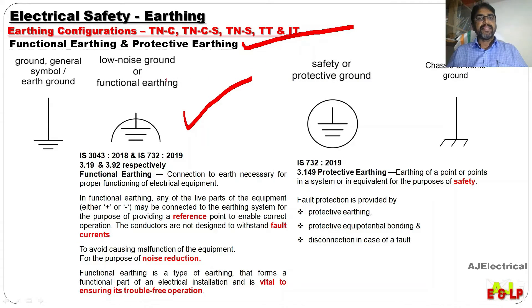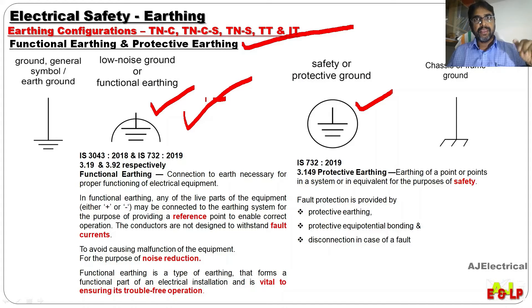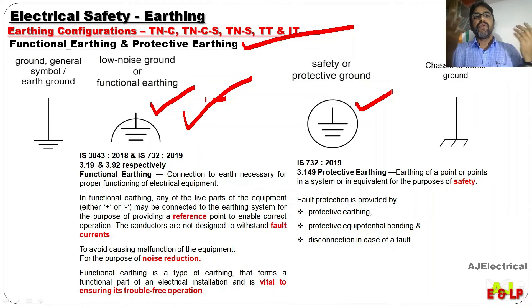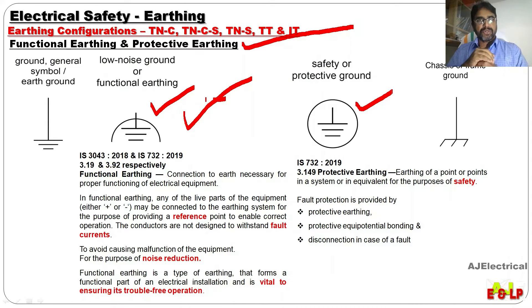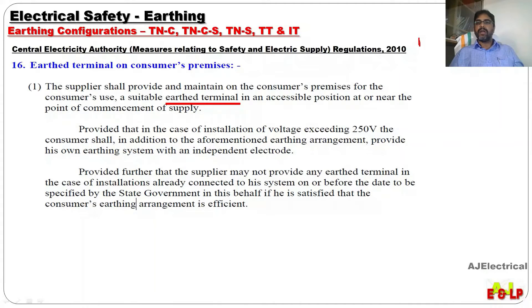The representation for functional earthing is like this. And for the protective side, protective earthing will be for the protection purpose — for getting protection. The body of the equipment earthing is not functional earthing; that is for the protection of the human handling the equipment. So the earthing done for the purpose of protection is called protective earthing. Please note this regulation.